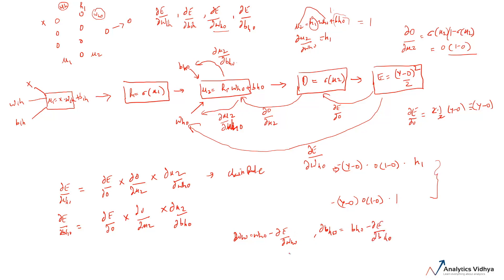We now have these values and can update our weights and biases between the hidden layer and the output layer. This is just one set of weights getting updated — between the hidden and the output. Let's go ahead and see how we can update the weights between the input and the hidden layer.